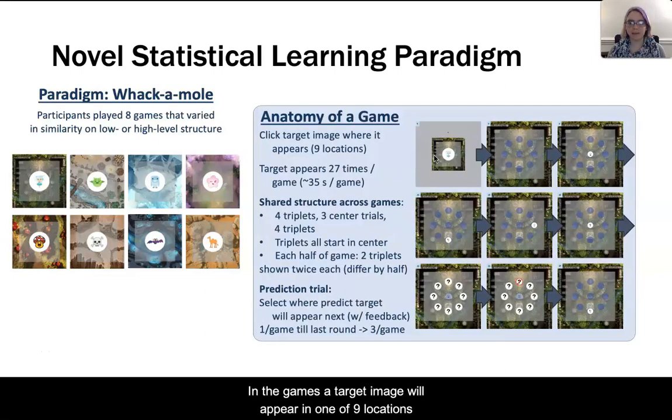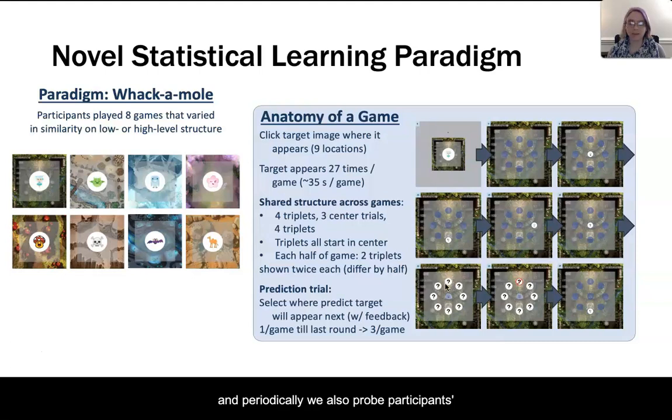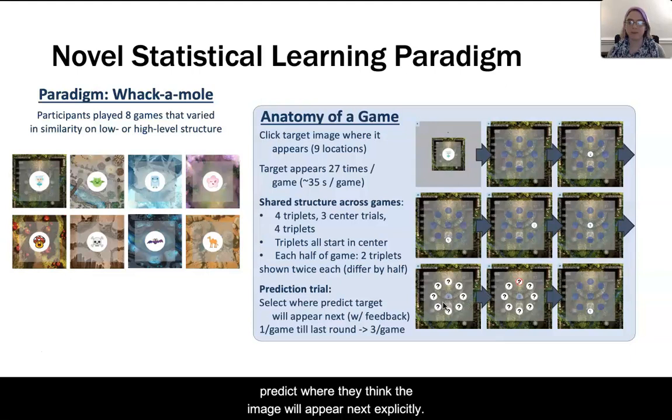In the games, a target image will appear in one of nine locations and you have to click it. And periodically we also probe participants' knowledge of the order information by having them predict where they think the image will appear next, explicitly.